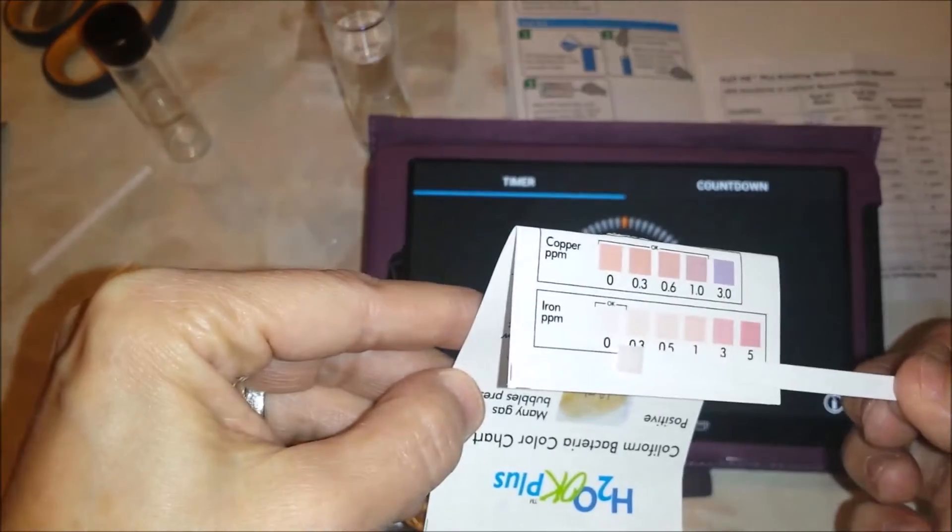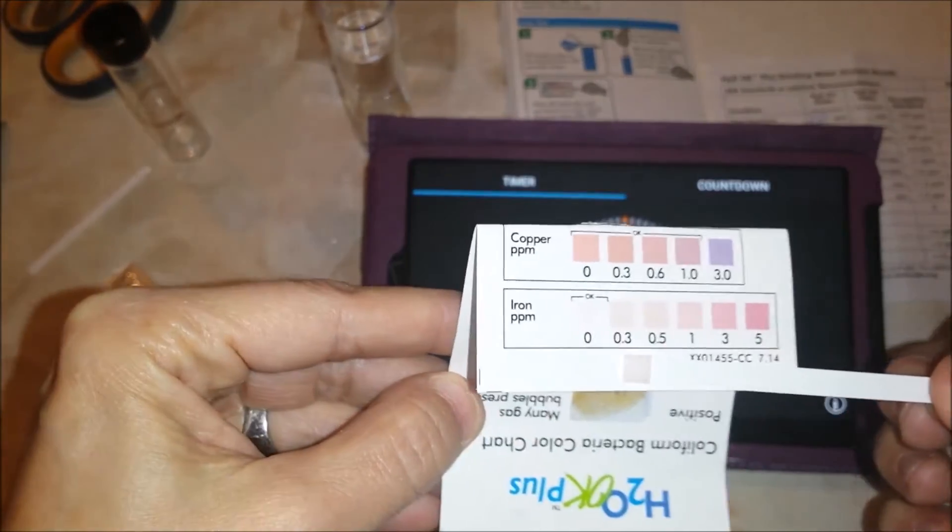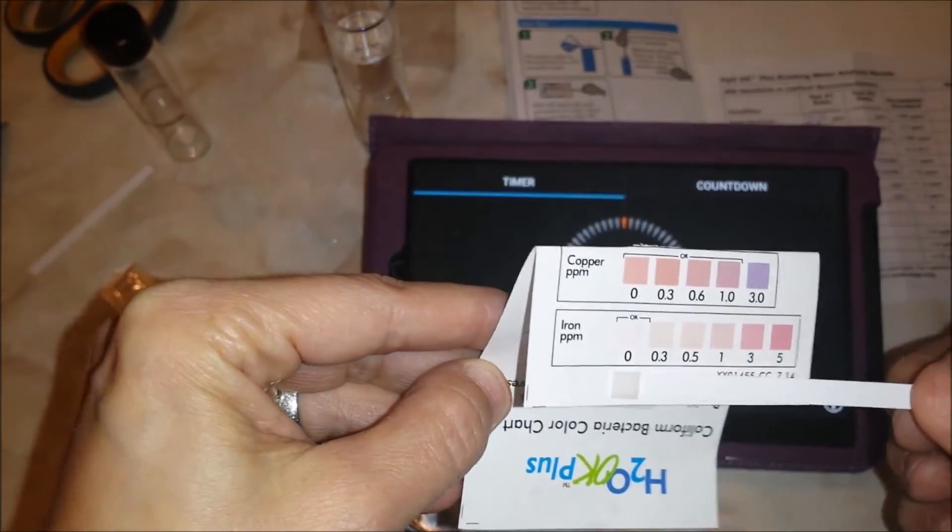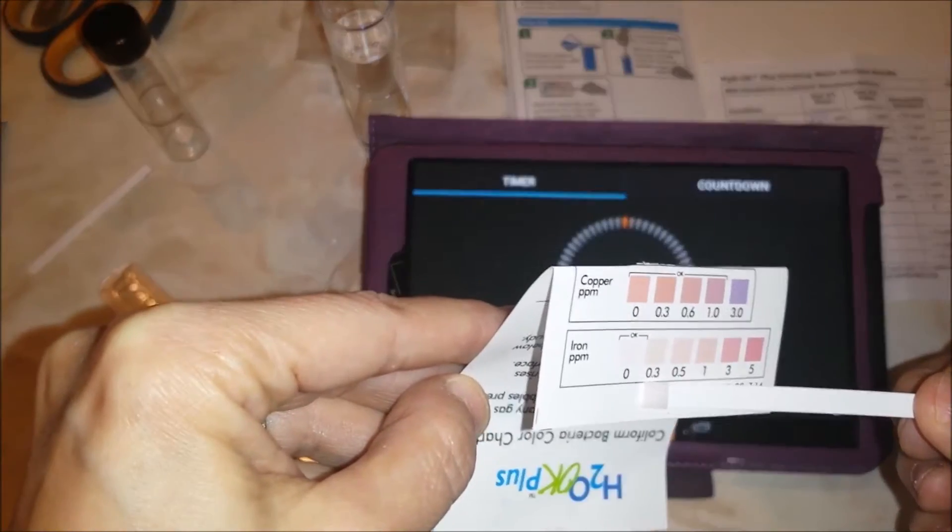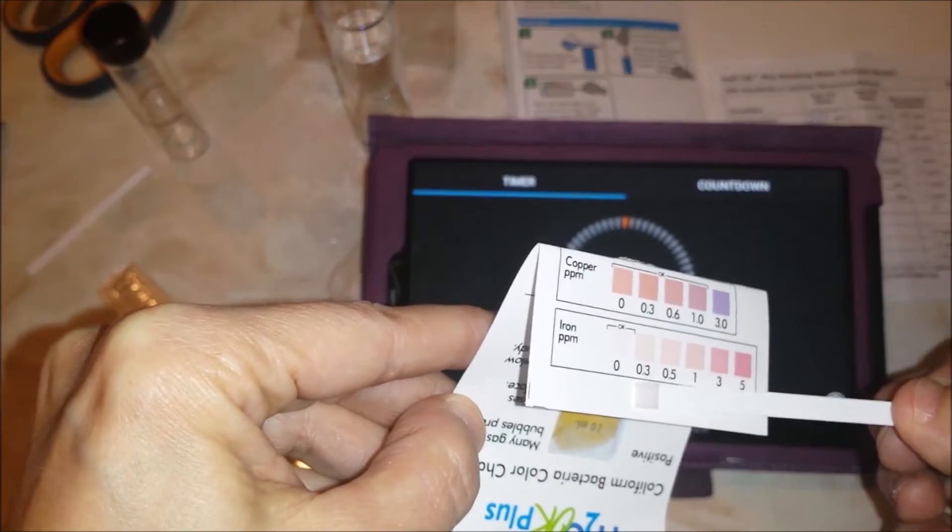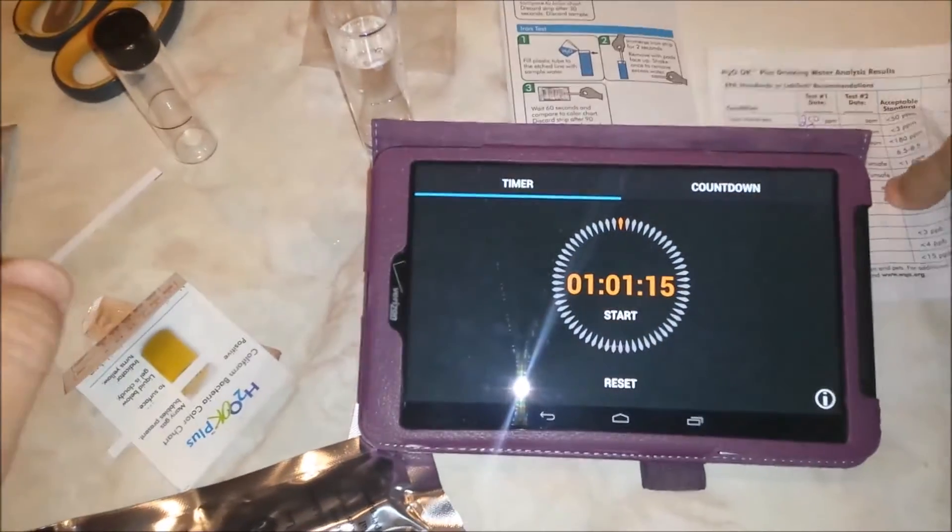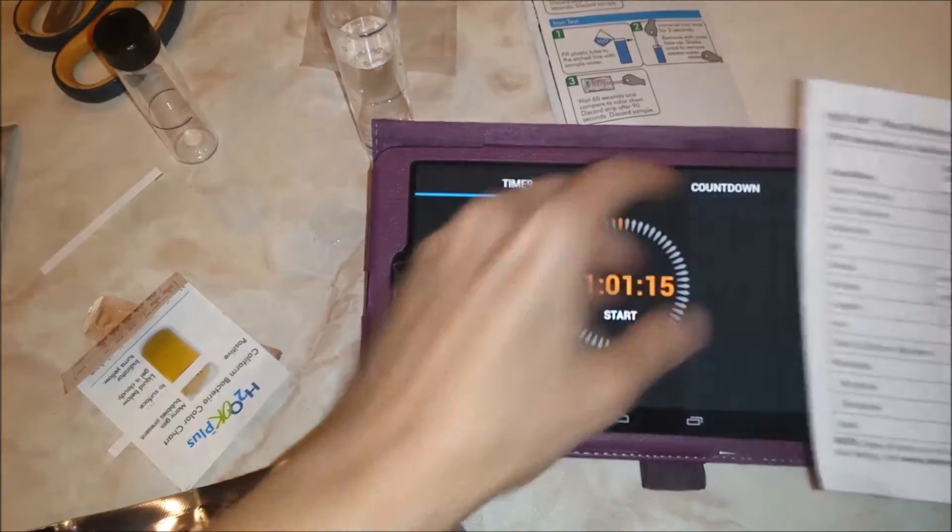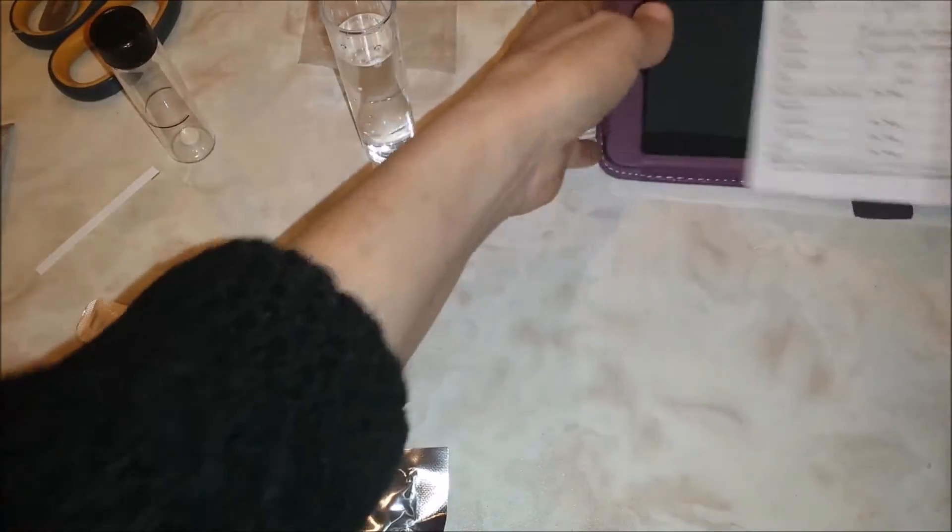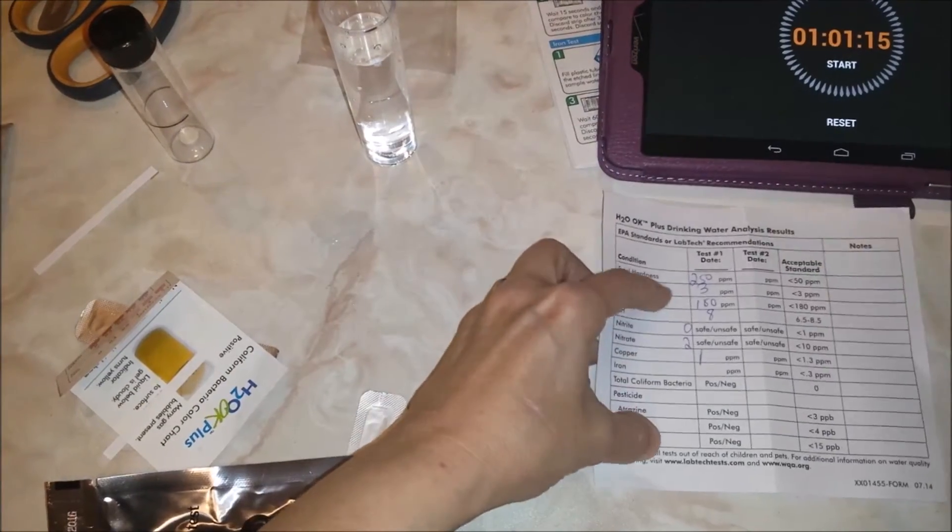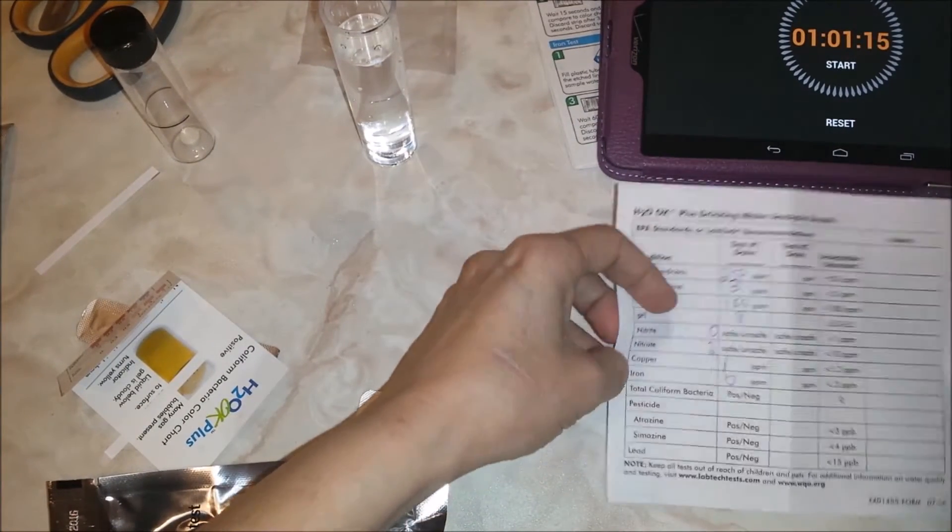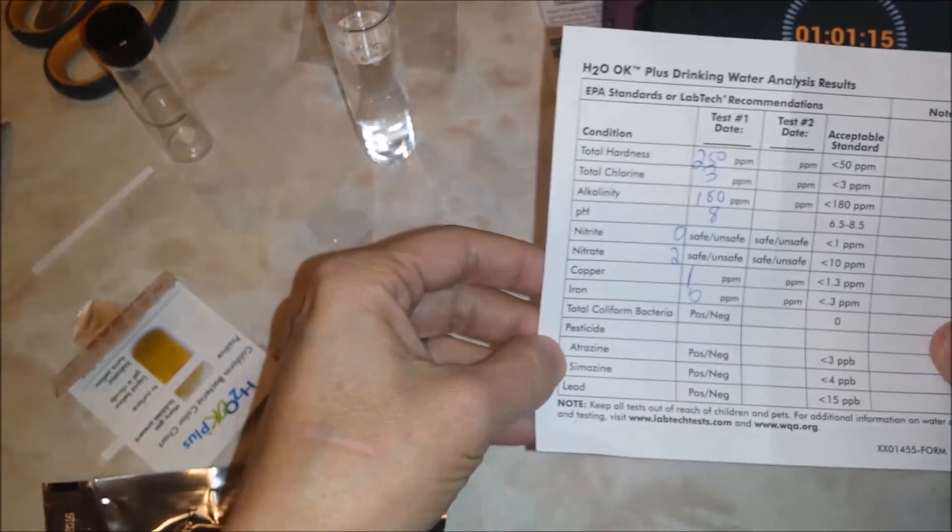60 seconds. Maybe a 0.1. It doesn't even - it's not even dark. I really don't even think it registered. I'm just going to go ahead and leave it at zero. So I'm going to mark our iron at zero. The acceptable range is 0.3, so we're fine with the iron.